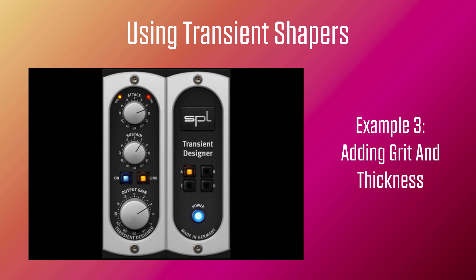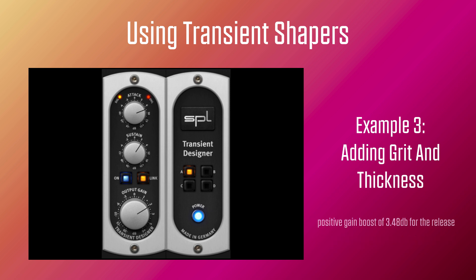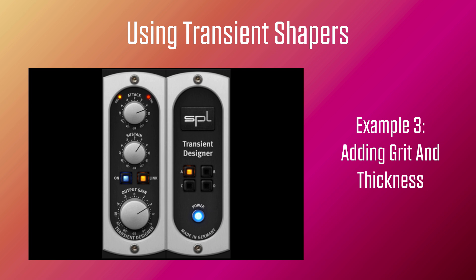I would be lying if I said I did something magical with this plugin. All I did was apply a positive gain boost of 7dBs for the attack, a positive gain boost of 3.48dBs for the release, and a 3dB boost for the output gain. Attack and release can be adjusted by applying either a positive or negative value. Positive attack values emphasize attack events, whereas negative values smooth them out. Positive sustain values lengthen the sustain of the sound, whereas negative values shorten them. That's pretty much it. However, it is when using these two controls together that the magic happens. I'll leave you to experiment with this wonderful plugin — you'll be amazed at the variety of results.